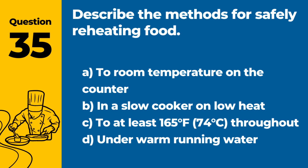Question 35. Describe the methods for safely reheating food. Answer: C. To at least 165°F (74°C) throughout. This ensures that any potential bacteria are killed during the reheating process.